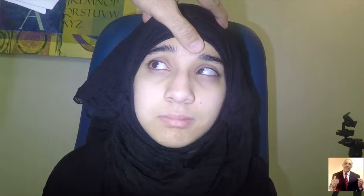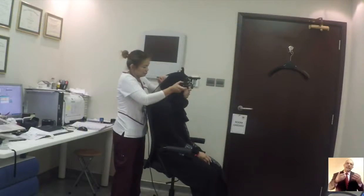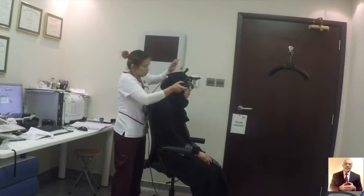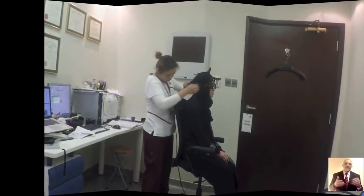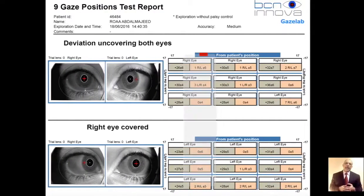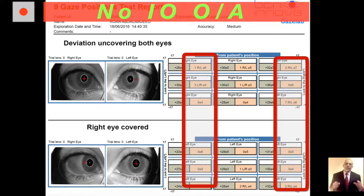I know that she has esotropia, but I'm not sure about the vertical problem. So I didn't know whether to do bilateral medial rectus recession only or to do inferior oblique. So I decided to do the Gaisler test, and the test told me there is no inferior oblique overaction. So I decided to do bilateral medial rectus recession only and to forget about the inferior oblique weakening in the procedure.